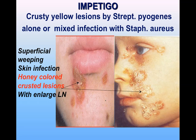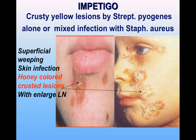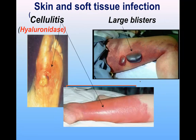Several skin infections are produced by Strep pyogenes. One is impetigo, which can also be caused by Staph aureus. Both organisms produce crusty yellow lesions mainly seen on the face in infants and children. These superficial lesions, when the crust is removed, leave superficial weeping lesions behind.